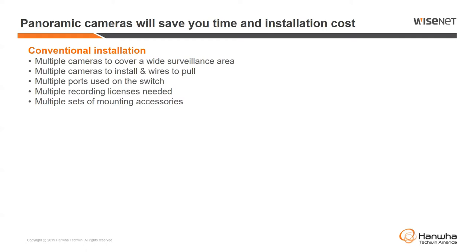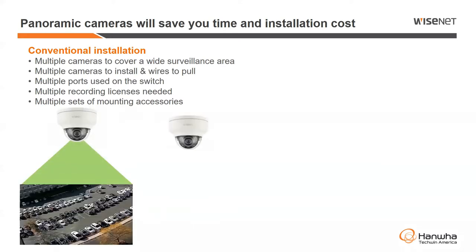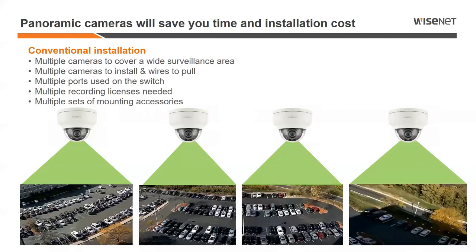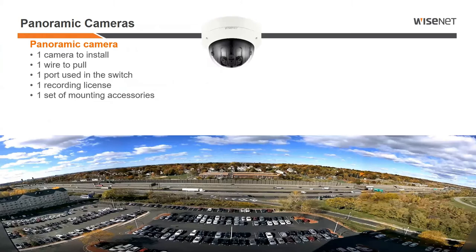On the other side, a conventional camera installation — if you need to cover a wide area like the front of a parking lot — you would need multiple cameras, multiple wire pulls, multiple ports on your switches, multiple recording licenses (one for each camera), and lots of mounting hardware and accessories. When we move to a panoramic multi-sensor camera, it's one camera with four lenses, four heads, stitched together in the camera. You have one camera to install, one wire pull, one port on the switch, one recording license, and one set of accessories for mounting. A lot of cost savings there, and no blind spot — you get this ultra-wide-angle field of view to see that parking lot.